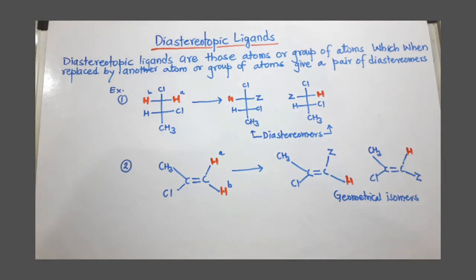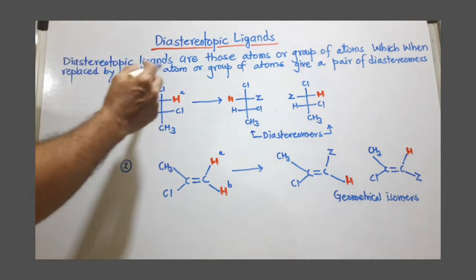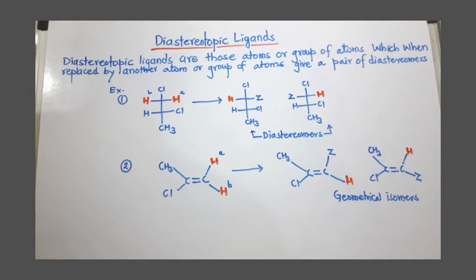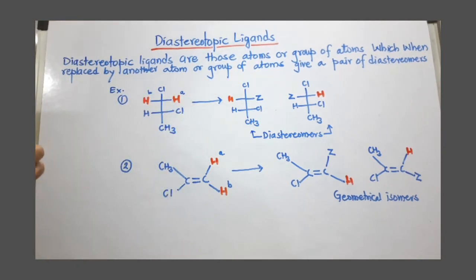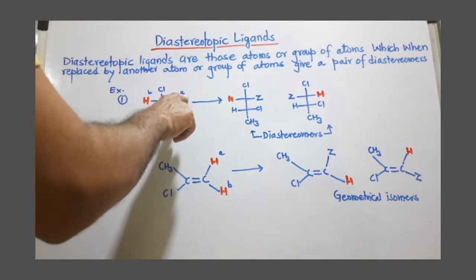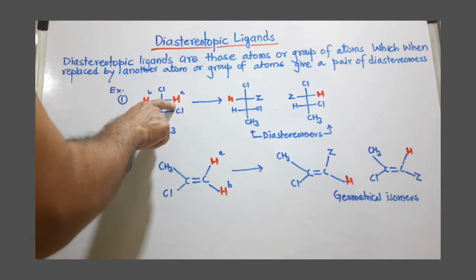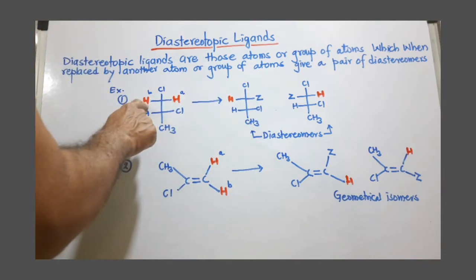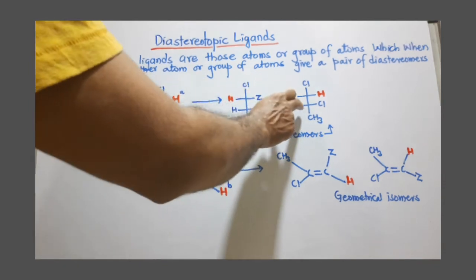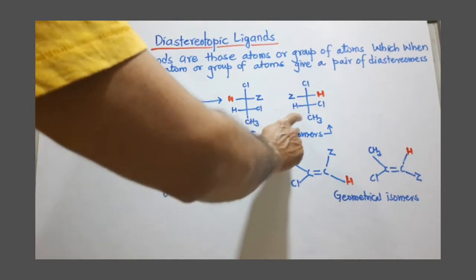We can explain this by considering two examples. In the first example, the red-colored protons are labeled A and B, and we must decide whether they are enantiotopic or diastereotopic. When I replace proton A with another atom Z, I get one molecule, and when I replace proton B with Z, I get another molecule.